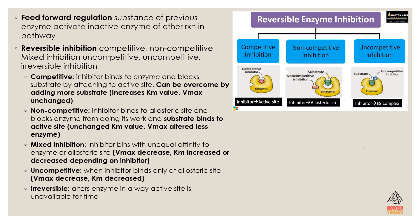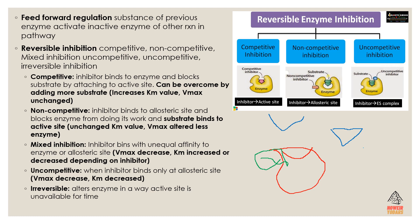Mixed inhibition is where an inhibitor binds with unequal affinity to either the active site or the allosteric site. In both cases, Vmax decreases, and KM increases or decreases depending on where the inhibitor binds. Uncompetitive inhibition is where the inhibitor only binds at the allosteric site, causing Vmax to decrease. Finally, irreversible inhibition alters the enzyme such that the active site is permanently unavailable, so no substrates can attach to it.